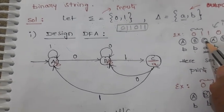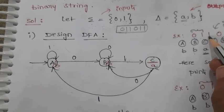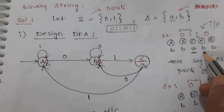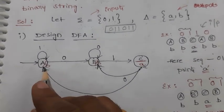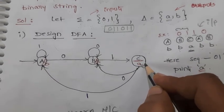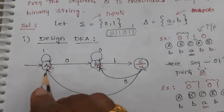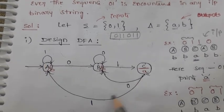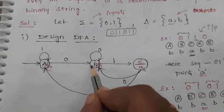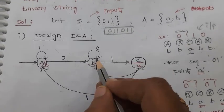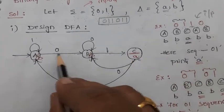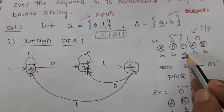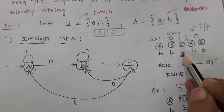We are at state C with output A. If 1 is the input next, it goes to state A with output B. This is because if we stayed at C, it would print A again without a proper 0,1 sequence, which would be wrong. From state A, if 1 comes it stays there; if 0 comes it moves to B, and then with another 1, it comes back to C with output A. Whenever the sequence 0,1 is encountered, it prints A.